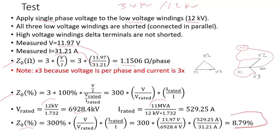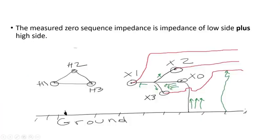Going back to the T-model: the high side (34 kV) shows the winding, but because it has no neutral or ground, it is open. Here is the Y side and here is X. From X to Y, that represents the zero sequence impedance.